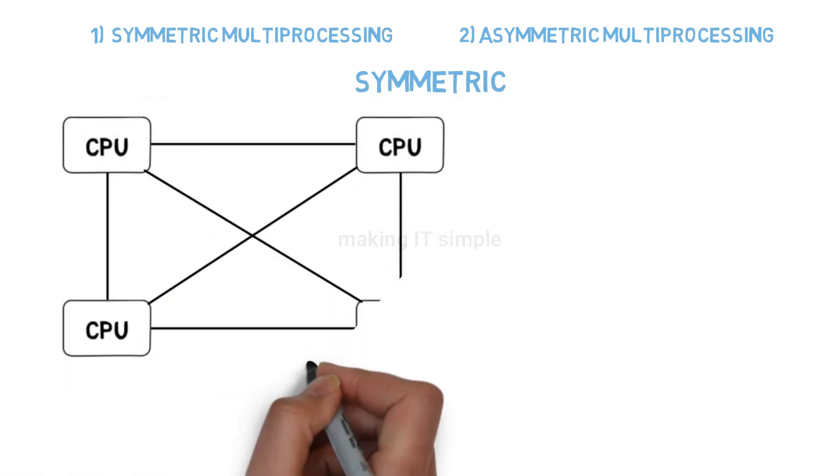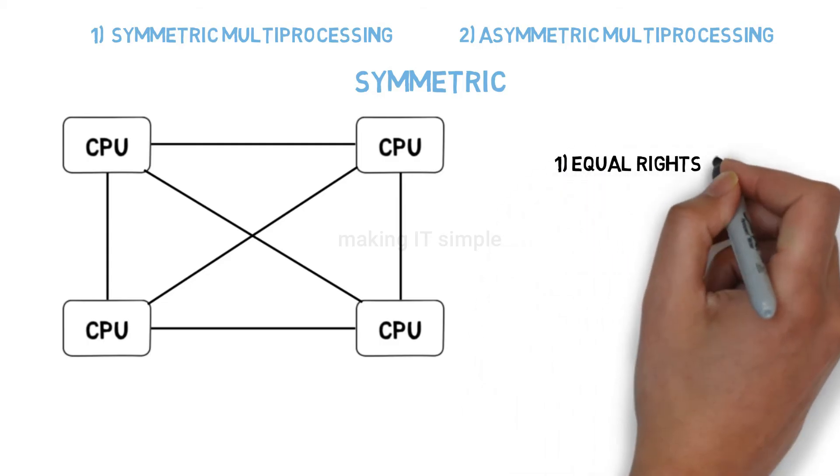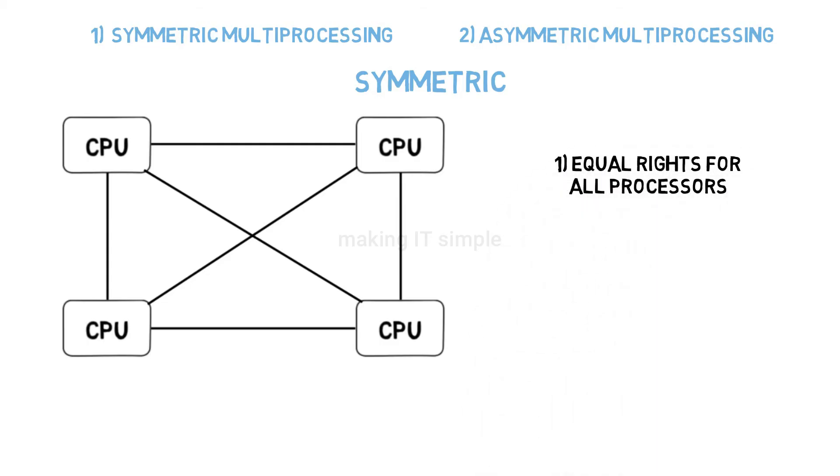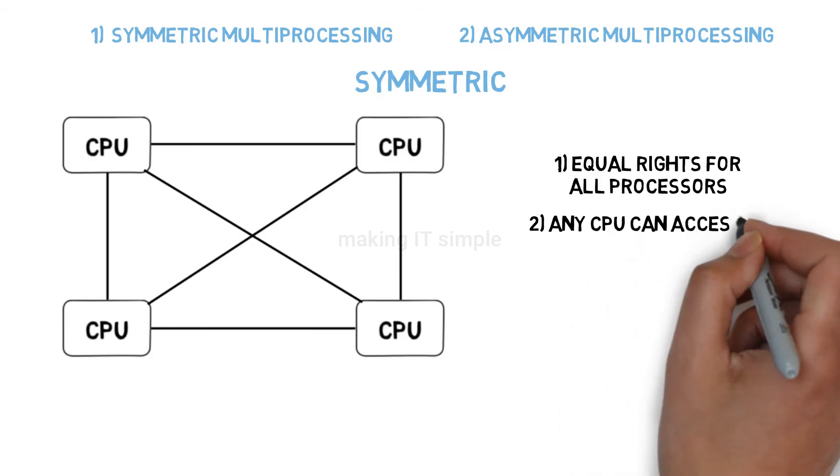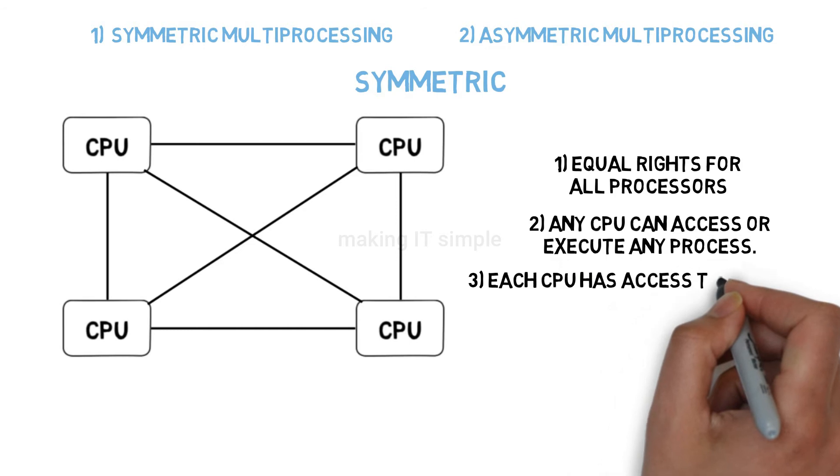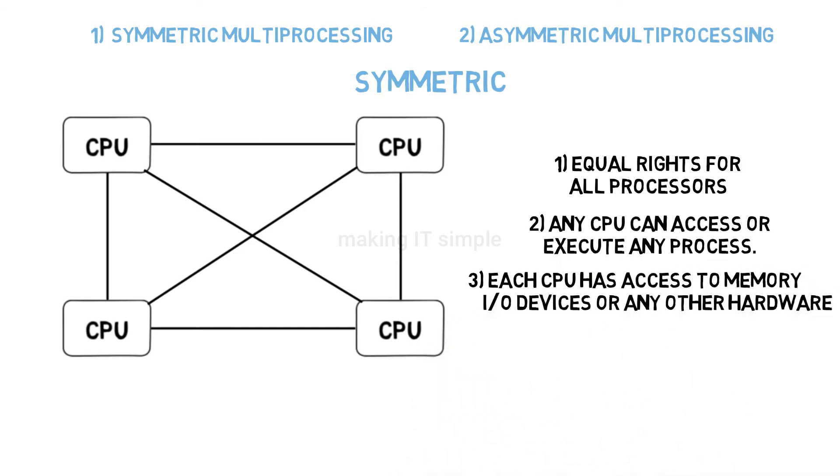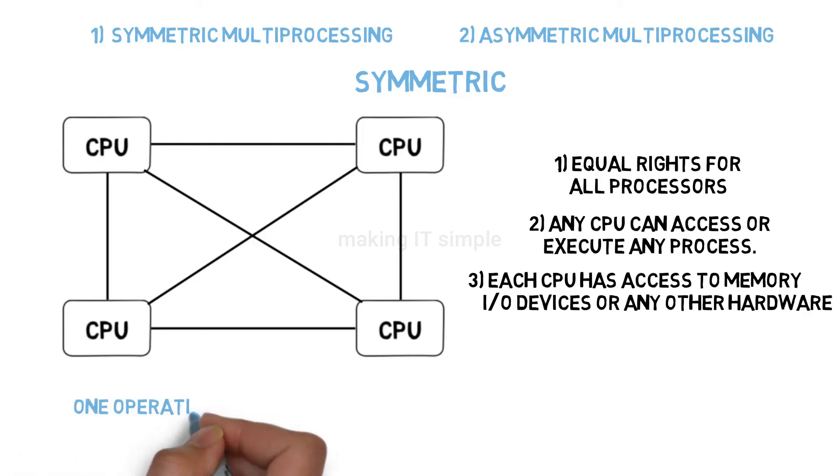In symmetric, all the CPUs have equal rights. There is no master-slave architecture. Each CPU has the right to execute any process. Each CPU can access the memory, input-output devices, or any other resources. This is called symmetric multi-processing. In short, one operating system controls all CPUs and all CPUs have equal rights.